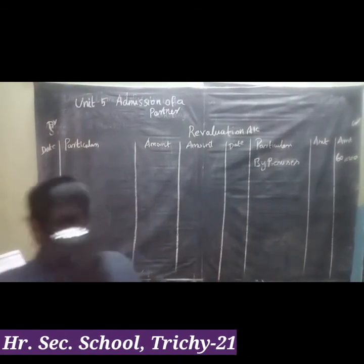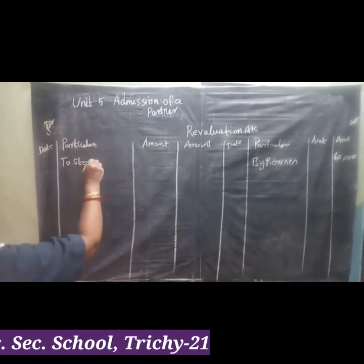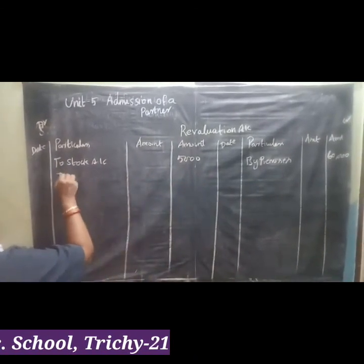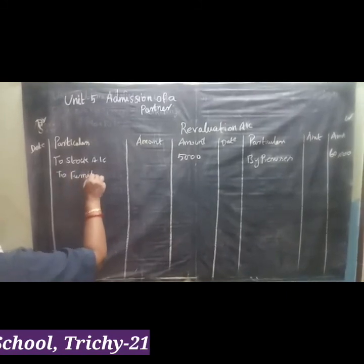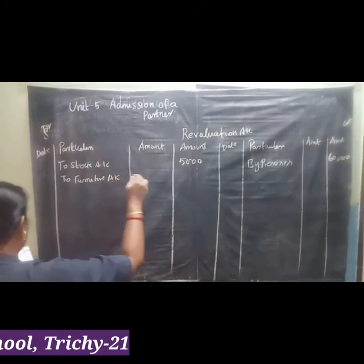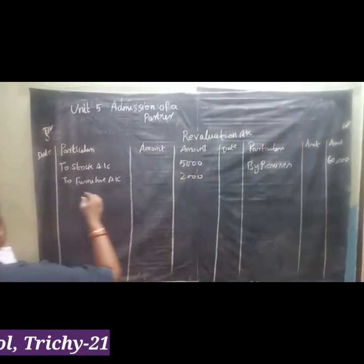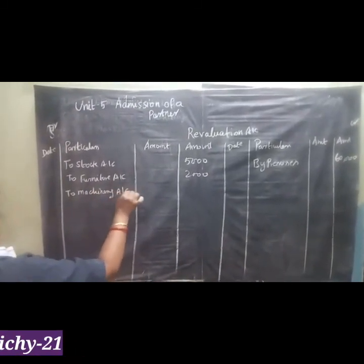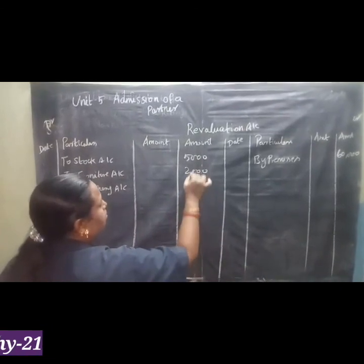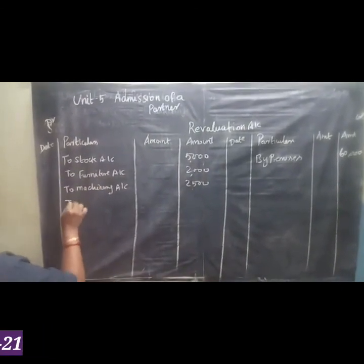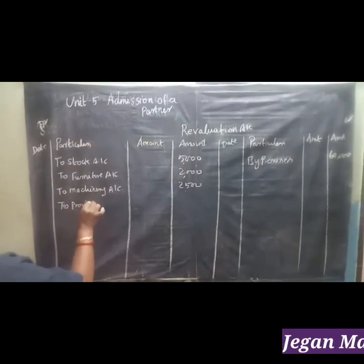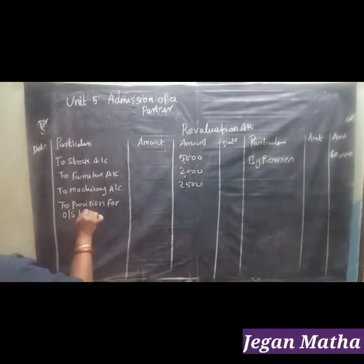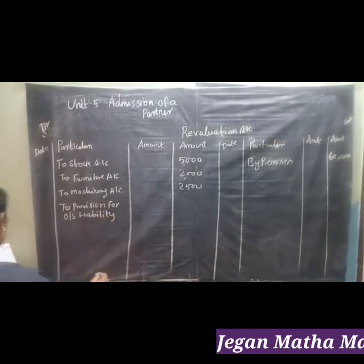Revaluation loss on the debit side: to Stock Account — 5,000; to Furniture Account — 2,000; to Machinery Account — 2,500. Then, Provision for Outstanding Liability — 500.